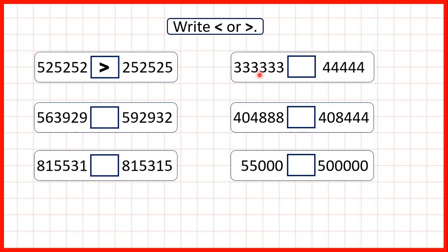Now we have 333,333 and 44,444. Here we're comparing whole numbers with a different number of digits. This first number has six digits but this second number only has five digits, and because we're comparing whole numbers, all we need to remember is that numbers with more digits are larger. The first number has a three in the hundred thousands place value column but the second number doesn't have any digits in the hundred thousands, so we know that this first number must be larger.